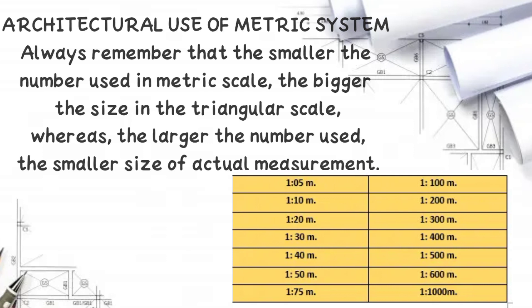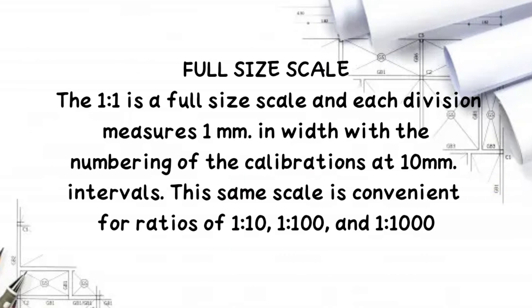Full Size Scale. The 1 to 1 is a full size scale and each division measures 1 mm in width, with the numbering of the calibrations at 10 mm intervals. This same scale is convenient for ratios of 1 to 10, 1 to 100, and 1 to 1000.